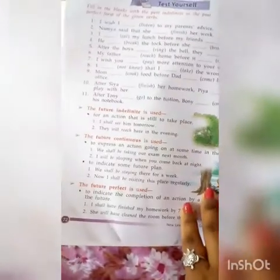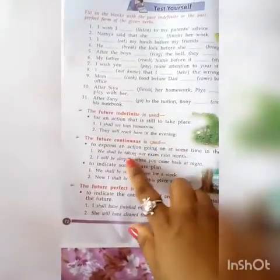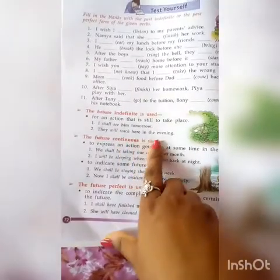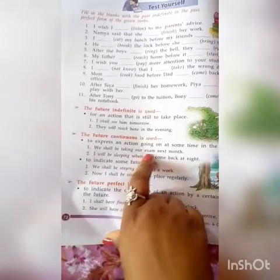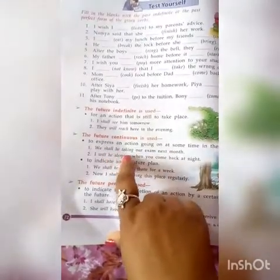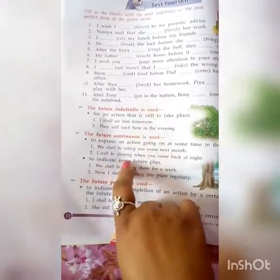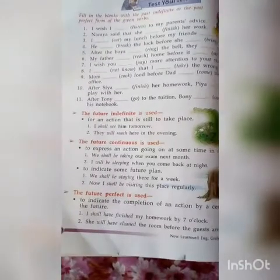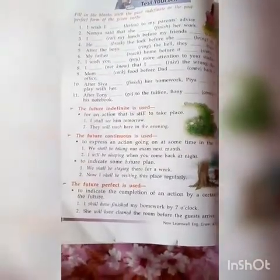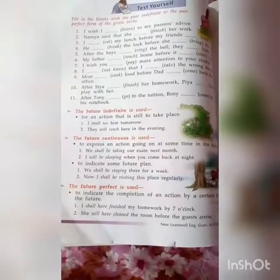Now for future tenses. The future indefinite is used for actions that will take place — for example, 'I shall see him tomorrow' and 'They will reach here in the evening.' The future continuous is used for ongoing future actions — 'We shall be taking our exam next month' and 'I will be sleeping when you come back at night.' It also indicates a future plan: 'We shall be staying here for a week' and 'I shall be visiting this place regularly.' The future perfect: 'I shall have finished my work by seven o'clock.'